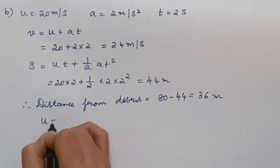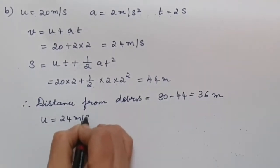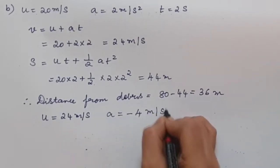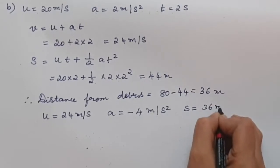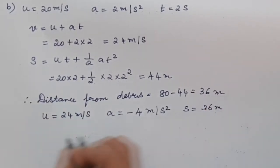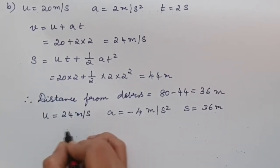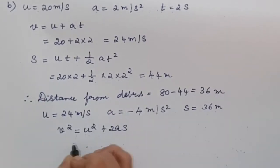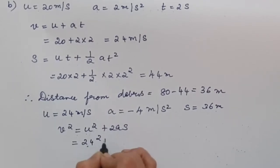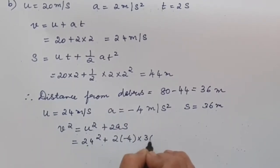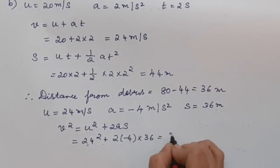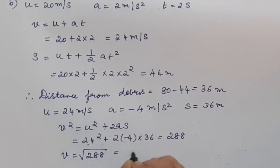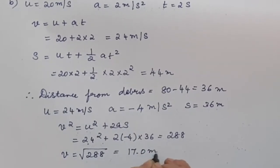Now, the initial velocity is 24 m/s, acceleration is −4 m/s², and the distance is 36 m. We need to calculate the speed. Using v² = u² + 2as: v² = 24² + 2 × (−4) × 36 = 288. So v = √288 = 17.0 m/s.